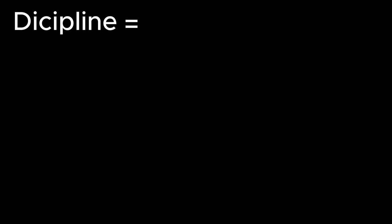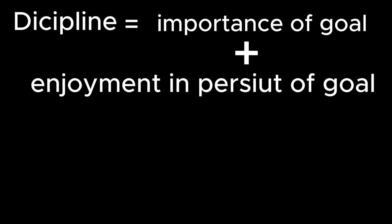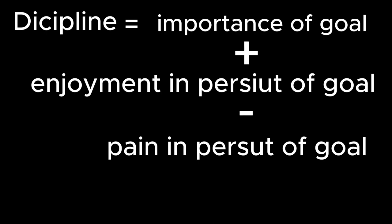In today's video, there's a discipline equation that I discovered in somebody's podcast, and I'd like to share it with you guys. The discipline equation works this way: discipline equals the importance of your goal plus the psychological enjoyment you get in pursuit of this goal, minus the psychological cost in pursuit of the goal, which is the pain you get in pursuit of it.